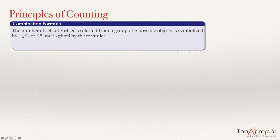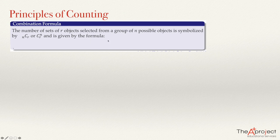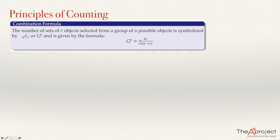The number of sets of r objects — with no arrangement, just sets — selected from a group of n possible objects is symbolized nCr, and we call these combinations. Sometimes it is symbolized with C and n at the top and r at the bottom. The formula is: nCr equals n factorial divided by r factorial multiplied by n minus r factorial. The number of combinations will always be smaller than the number of permutations because we have an additional factor in the denominator.